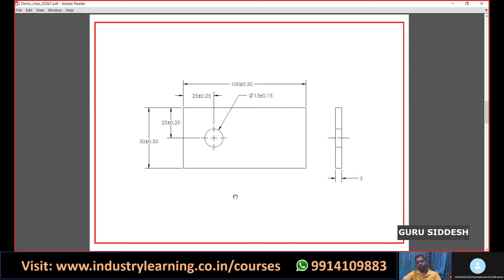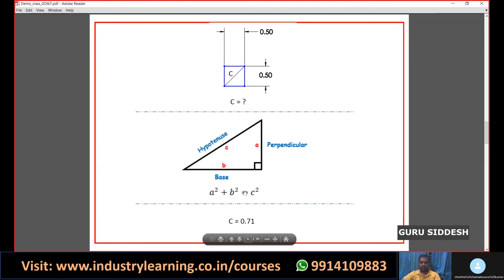Now from this, how can we convert this hole into geometrical tolerance? There are three steps involved in this. First step is we have to understand what is the range of the tolerance zone.